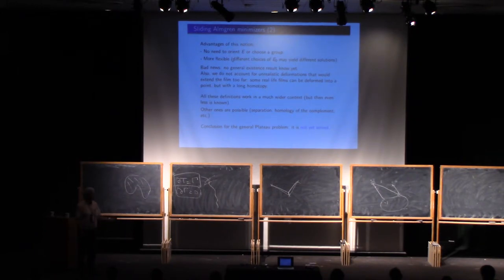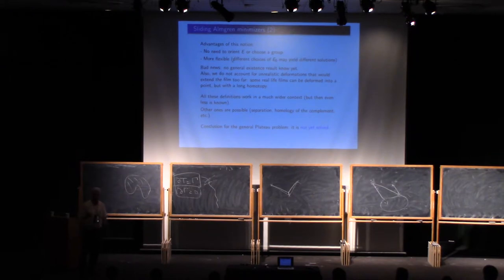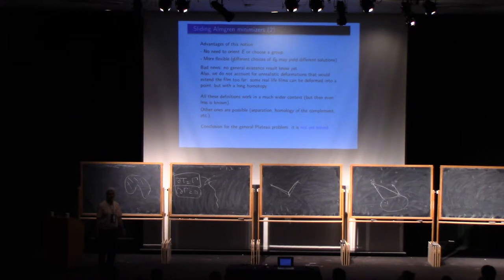It seems realistic, but I'm not sure. It looks simple in the sense that you don't need algebraic topology or currents to set the question. But the question has a bad problem: for each choice, there is no general existence theorem, so we would also have to prove an existence theorem.